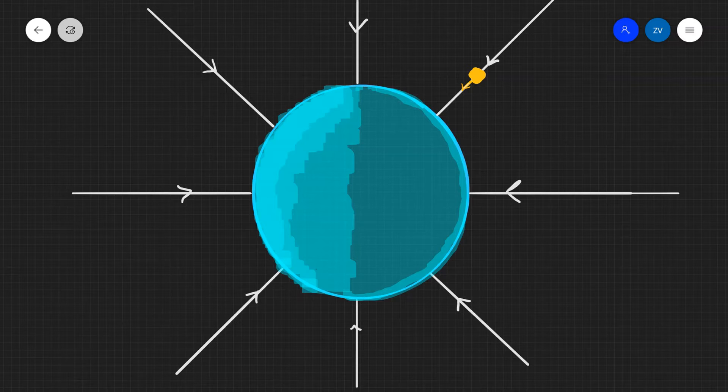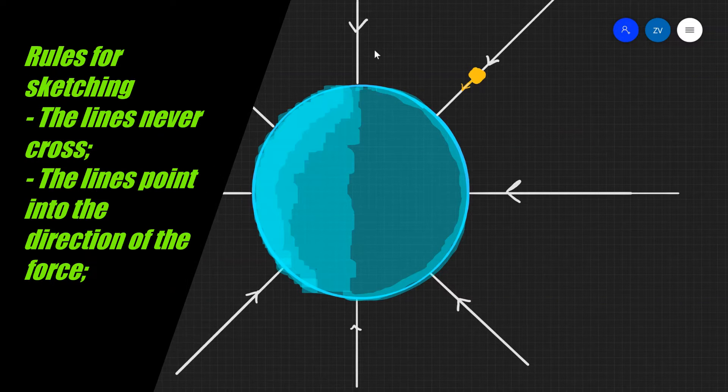How do we represent gravitational fields? In a region of space we use arrows. Here are some important rules: First, the lines never cross. Additionally, lines, which are also known as field lines, point in the direction that a small test mass will experience a force.